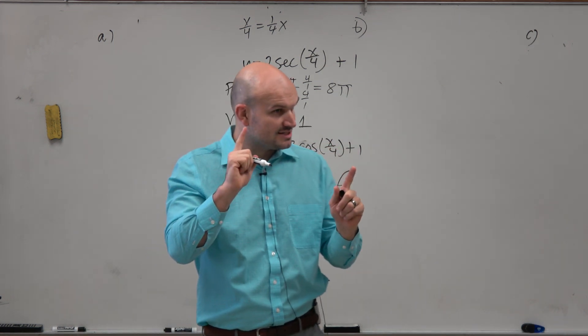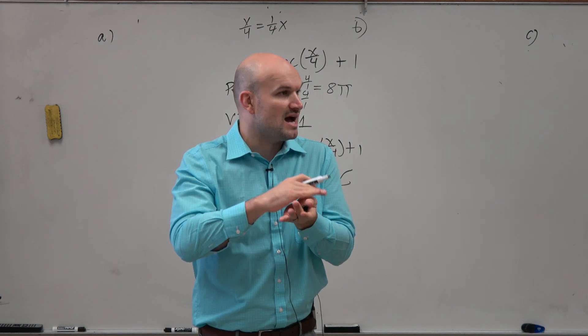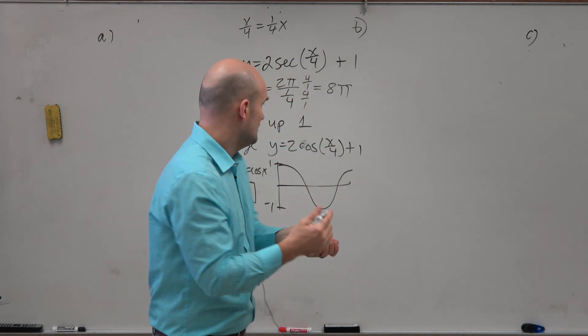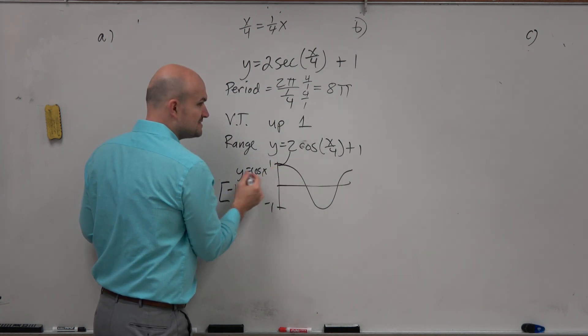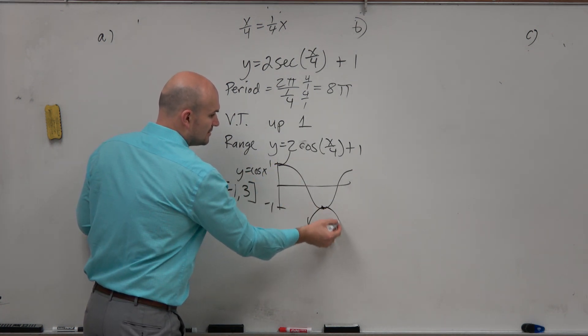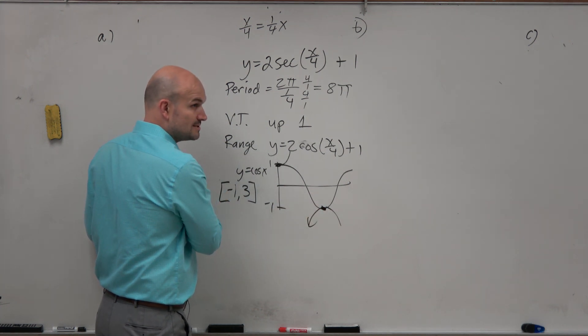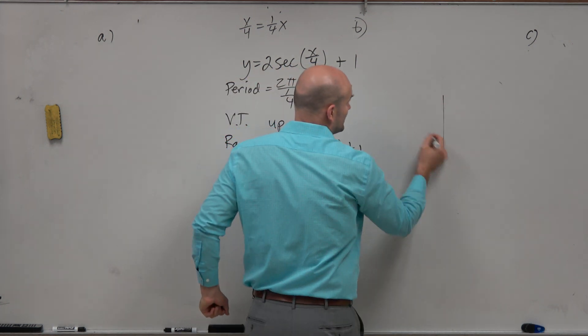But again, we need to understand, how does the graph of secant relate to the graph of cosecant? Well, it's really this graph in the opposite directions, right? Now, again, they do share those coordinate points, right? Again, by knowing, like looking at the inner circle.